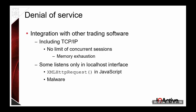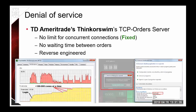Long story short, you can run the application out of memory with many requests and kill the TCP service — a denial of service. On TD Ameritrade's thinkorswim, the TCP orders server could be killed with 300 simultaneous connections. This is fixed now, but let's see another example.